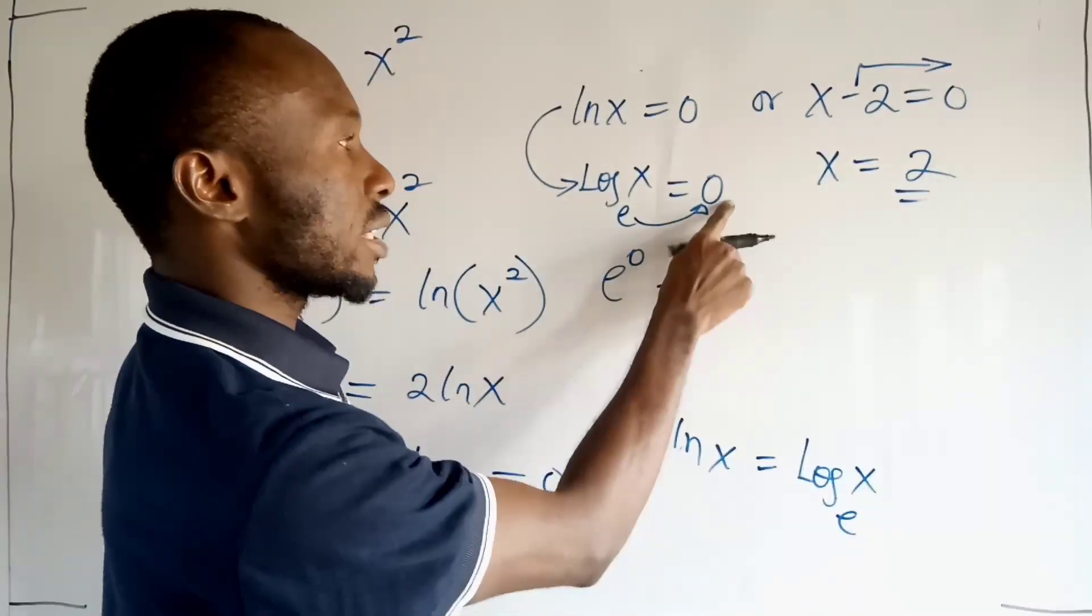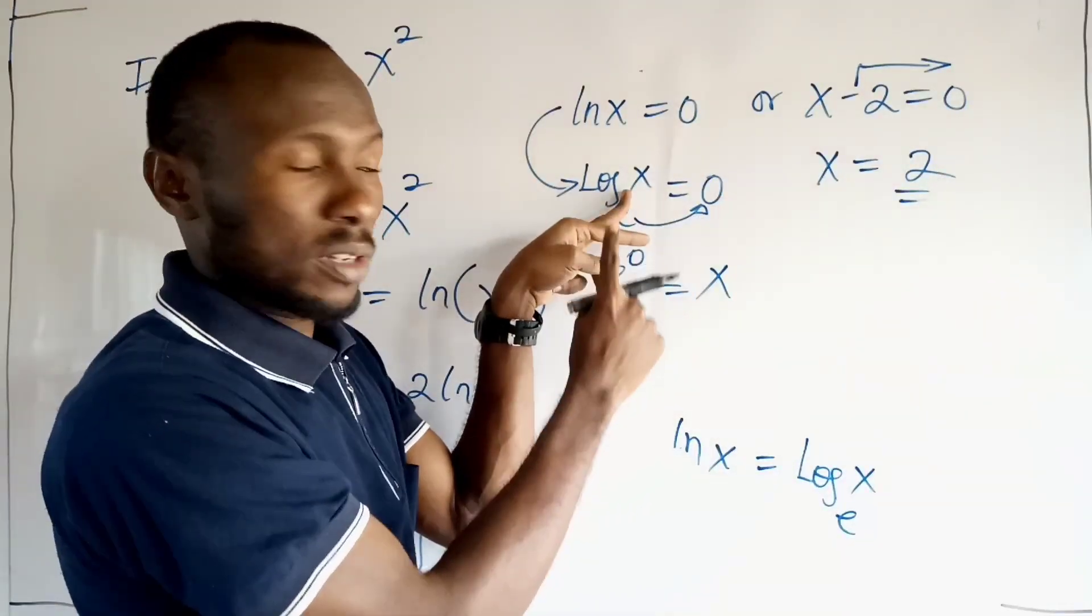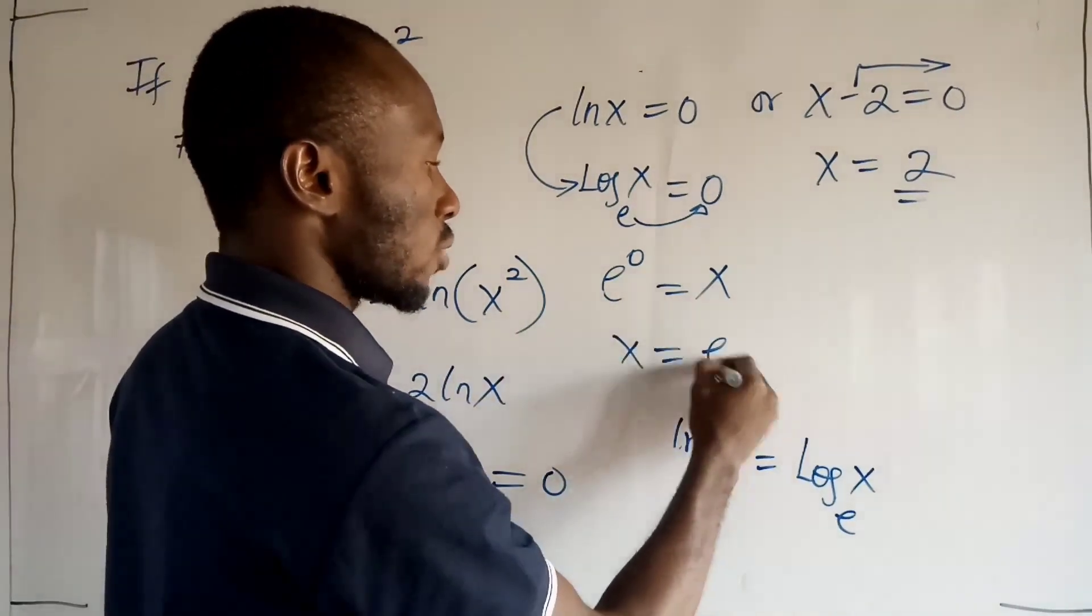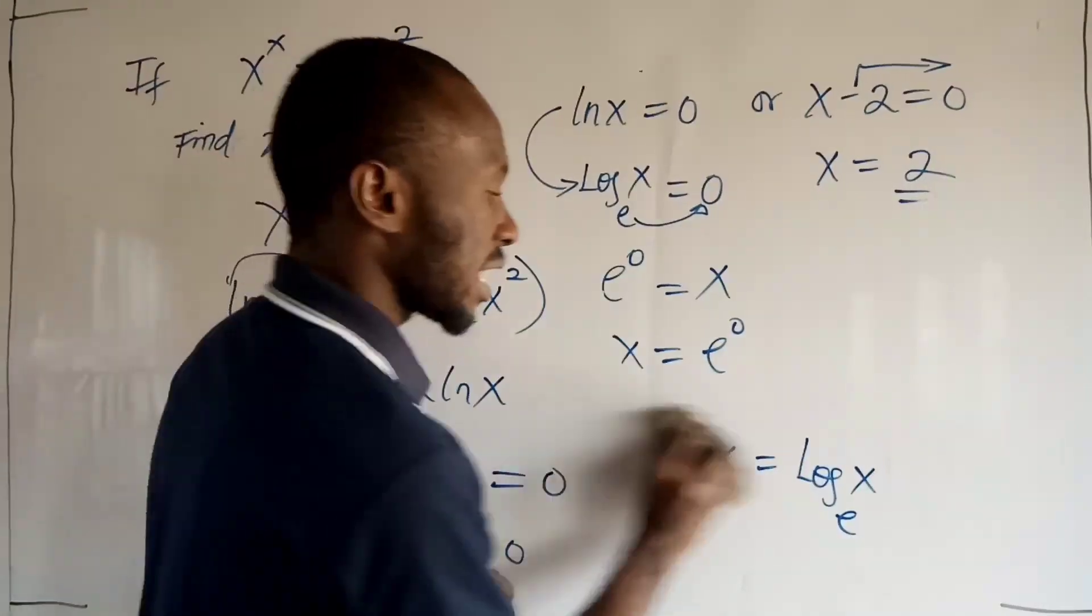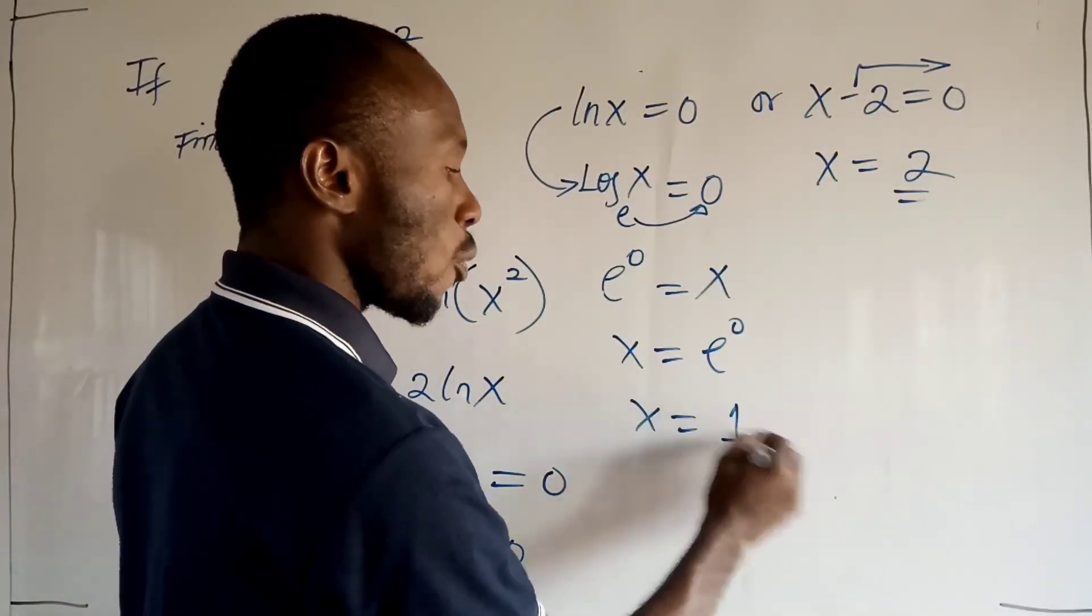Just like taking e will take this as its power, then you put it to the argument of the logarithm or the input of the logarithm. Now you can also see x is equal to e to the 0 and of course, it is very clear that e to the 0 is nothing but 1.